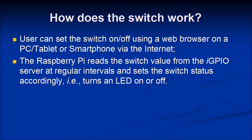This works as follows: the user can set the switch on or off using a web browser. And the Raspberry Pi, in this example, reads the switch value from the IGPIO website server at regular intervals and sets the switch status accordingly — that is, it turns an LED on or off.